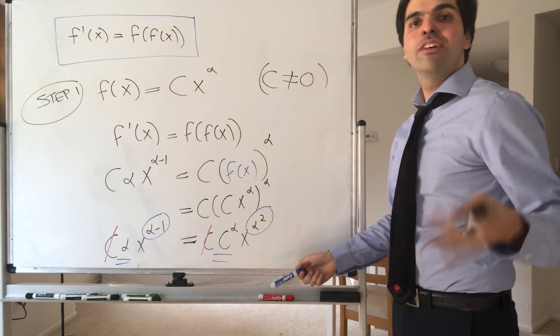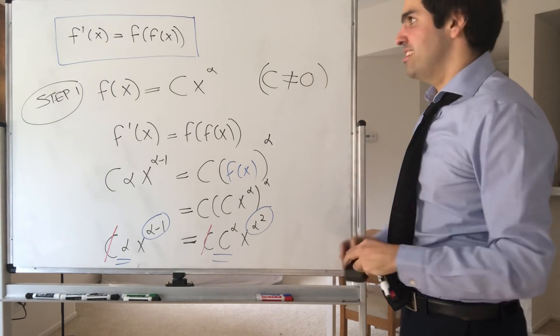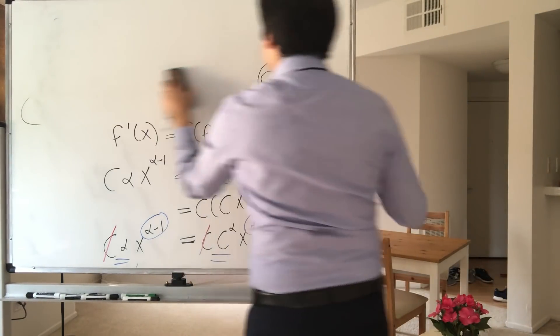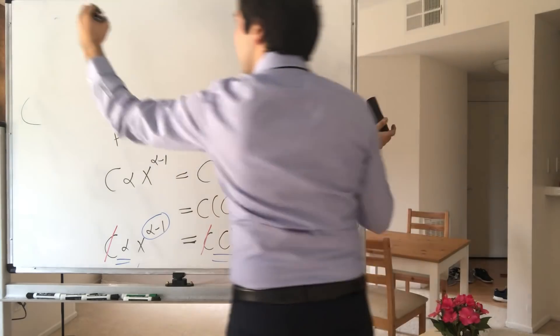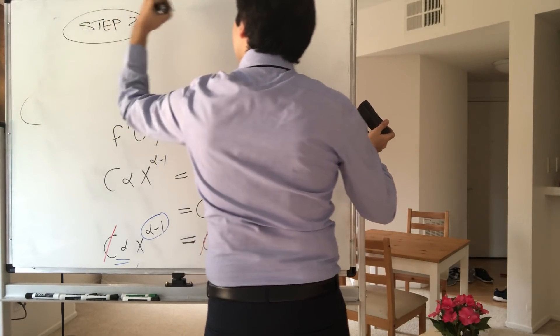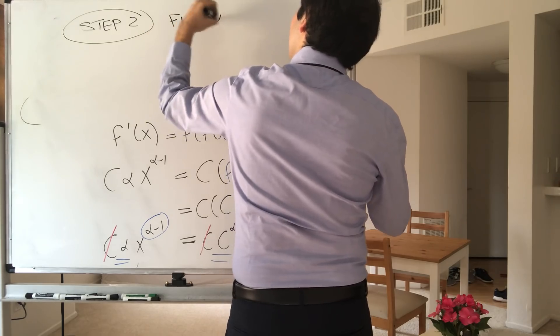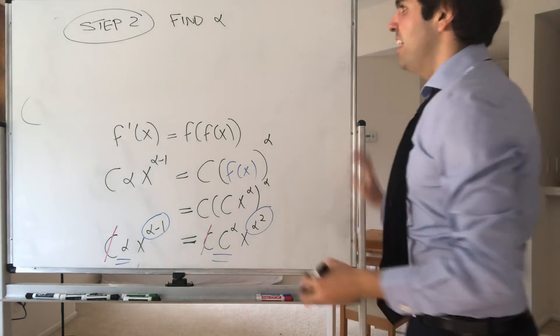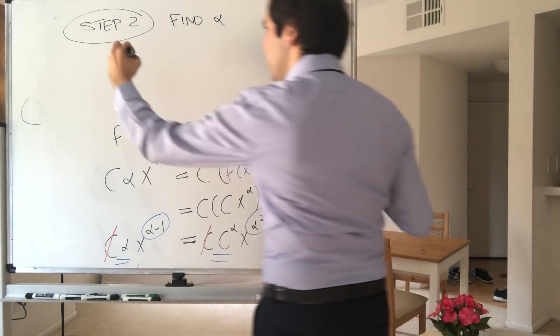So, step two now. Let's find alpha. So it's like finding Nemo, but this time for alpha. And for this, as I said, compare the exponents.